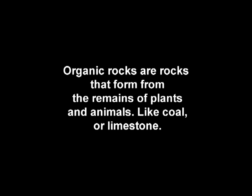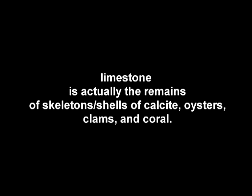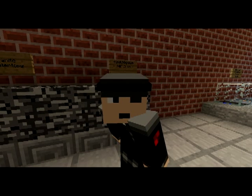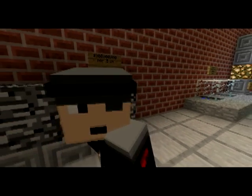Organic rocks are rocks that form from the remains of plants and animals, like coal and limestone. Limestone is actually the remains of skeletons, scales, and calcite, oysters, clams, and coral. There's a lot of stuff in limestone.